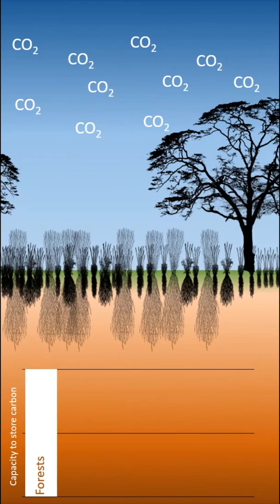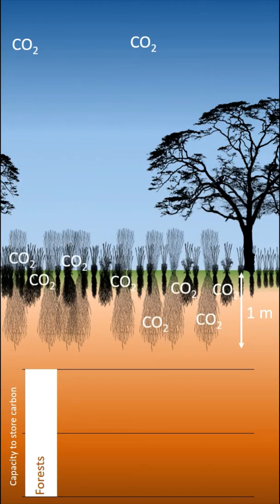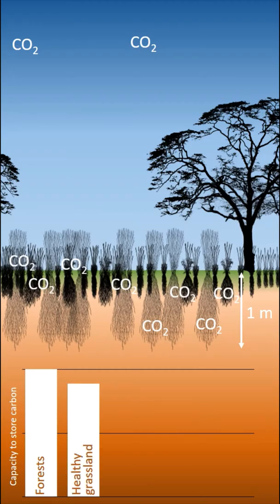But healthy grasslands are almost as important as carbon stocks. They mainly store carbon in the soil up to a depth of one meter and more. Tropical grasslands can store up to 180 tons of organic carbon per hectare: 20 tons above the ground and 160 tons below the ground.